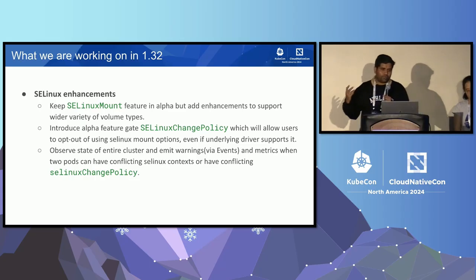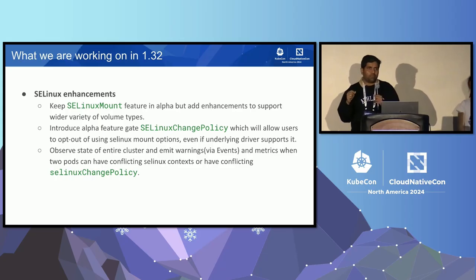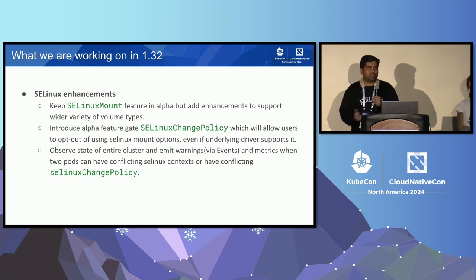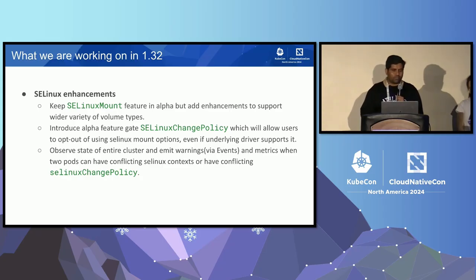We want to emit metrics and events when there's a potential conflict — for example, if two pods are using the same volume but with conflicting SELinux labels, we want to inform both pod authors that their pods may have errors. That's something we are introducing in 1.32.